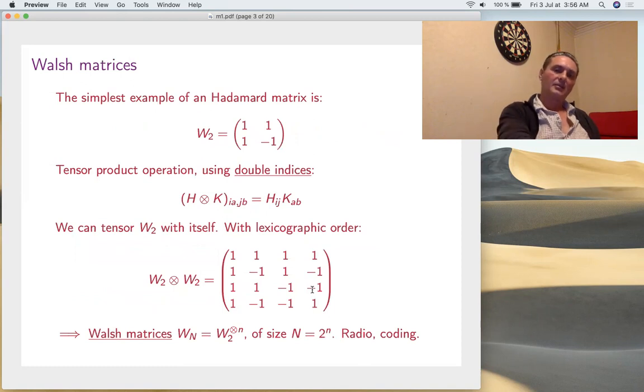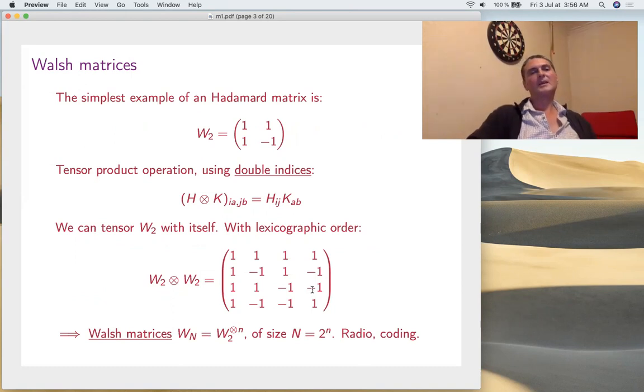What examples do you have of such matrices? We have the Walsh ones. That's the simplest one: one one, one minus one. Then by doing tensor products with double indices, that's the way. The formula is very simple. You can check right away that if H and K are Hadamard, this is Hadamard - tensor products, an online computation.